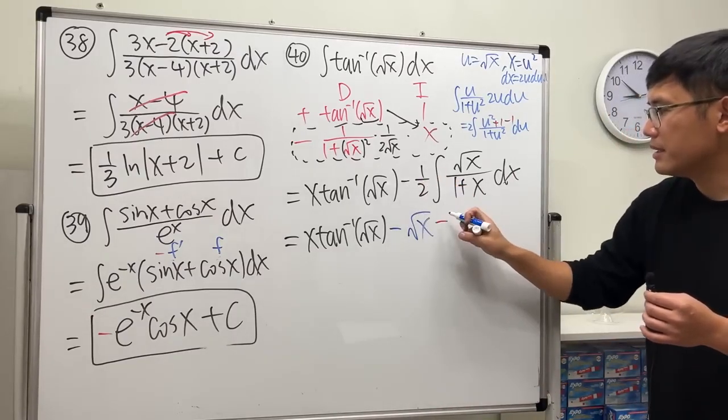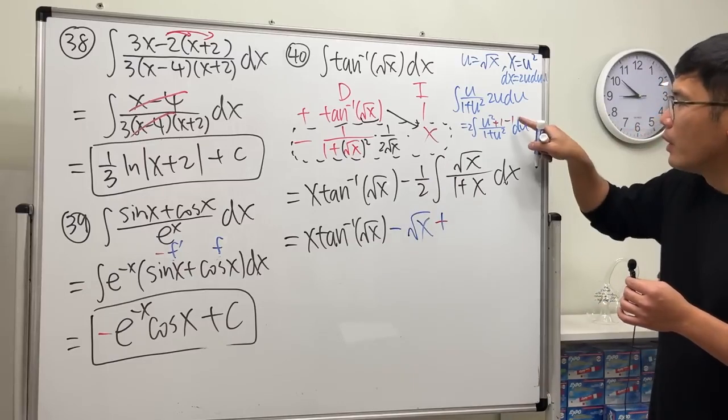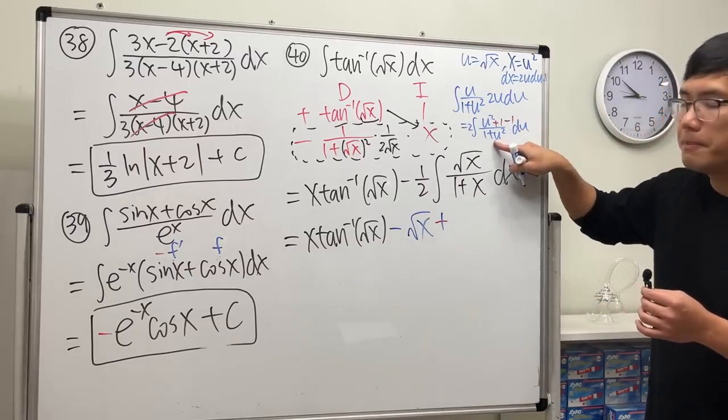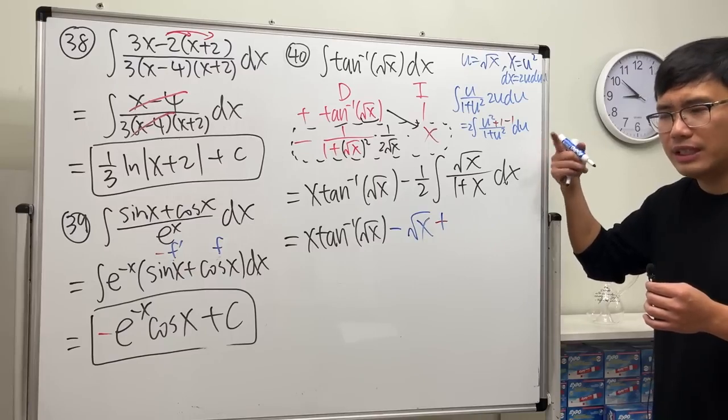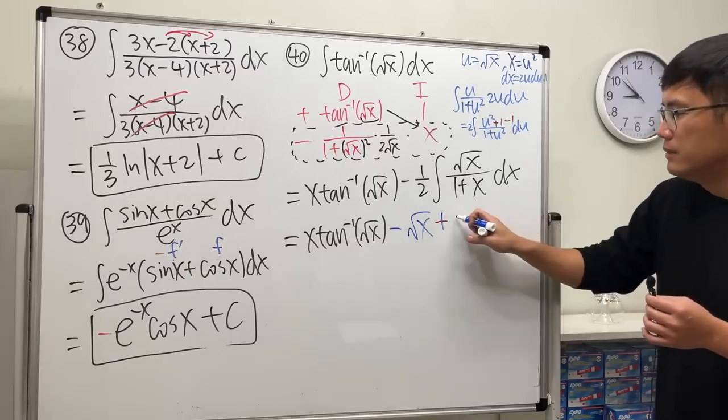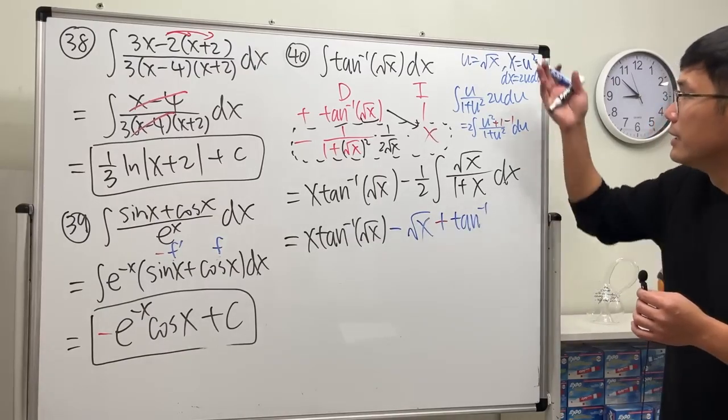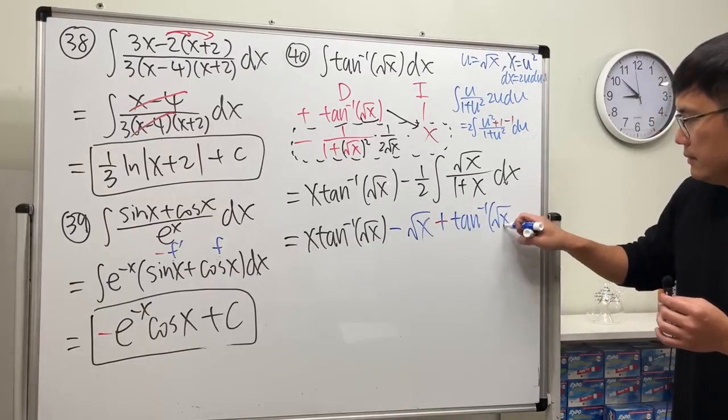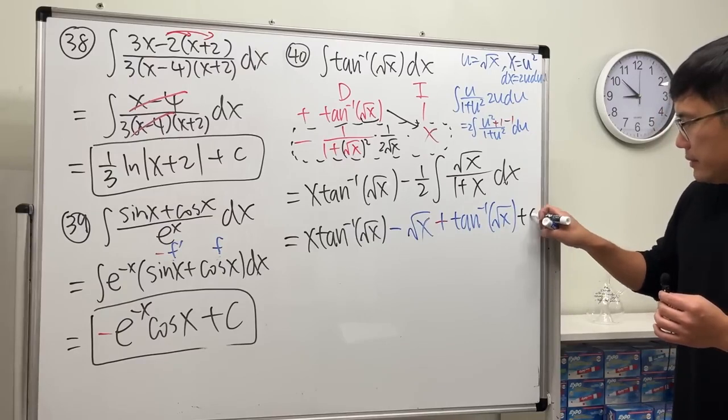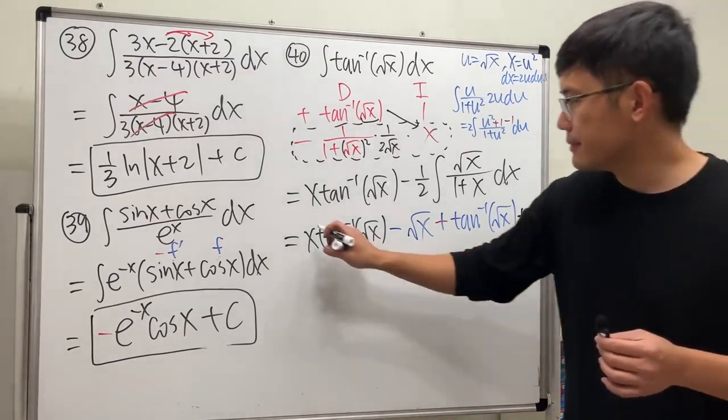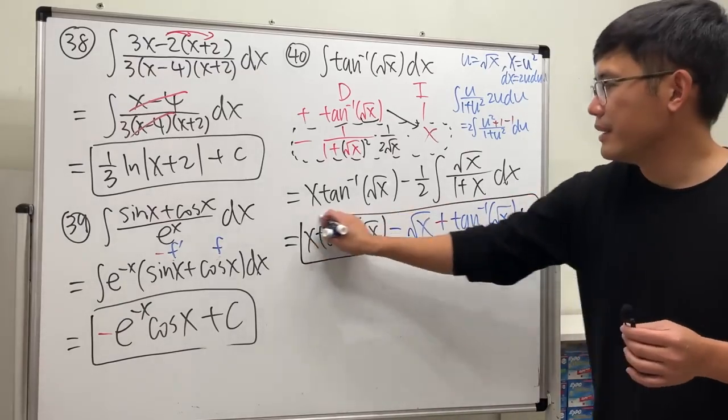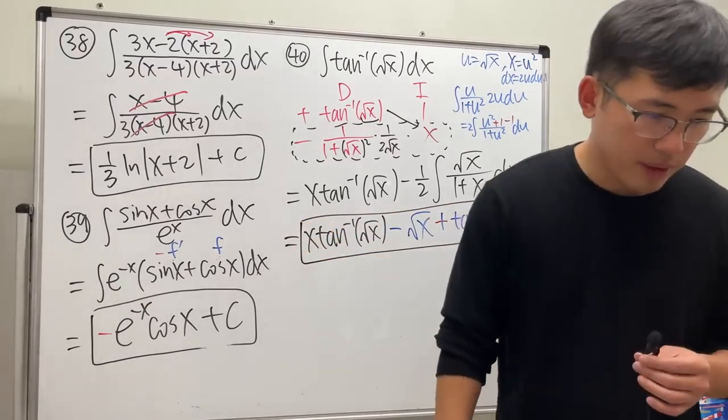But another minus here, so it becomes a plus. One over u squared is going to give us the inverse tangent of u, and u is square root of x. So that's that done. Yeah, fitting three integrals in one question.